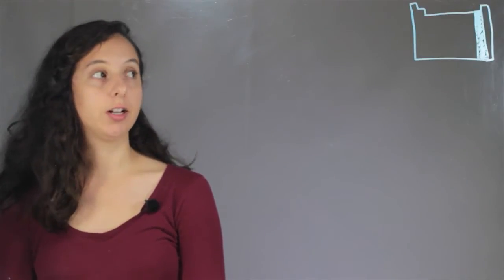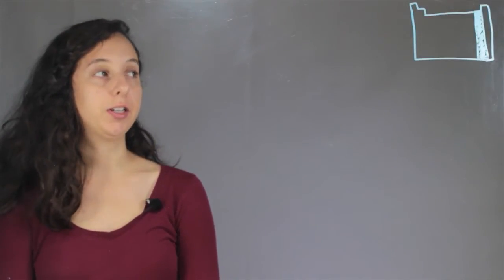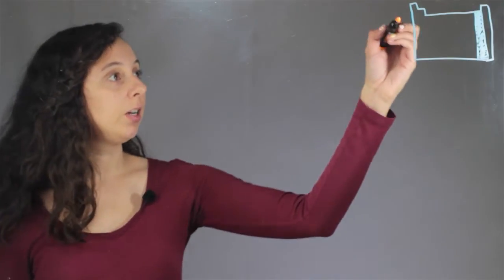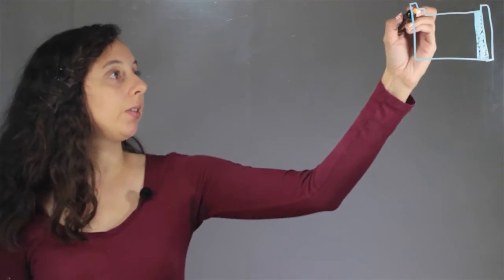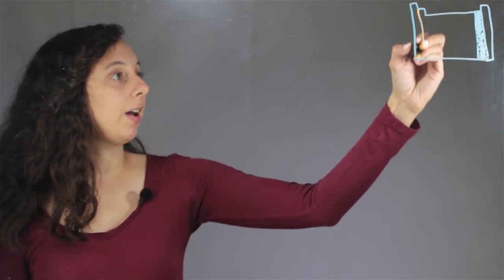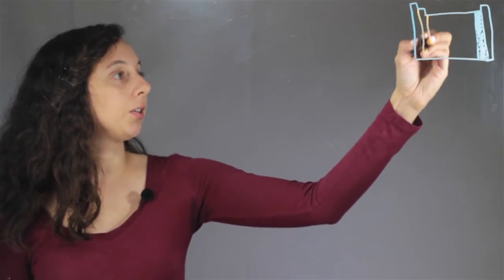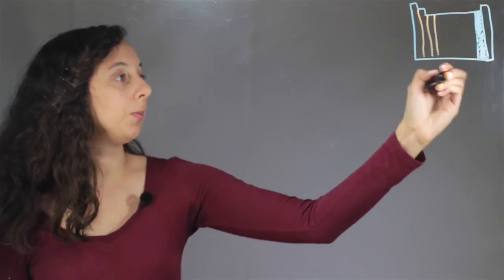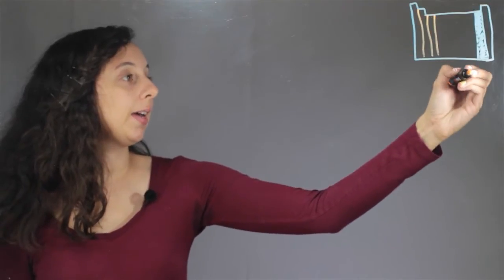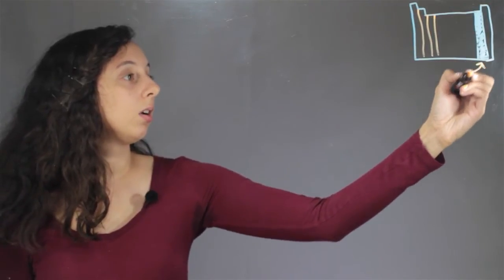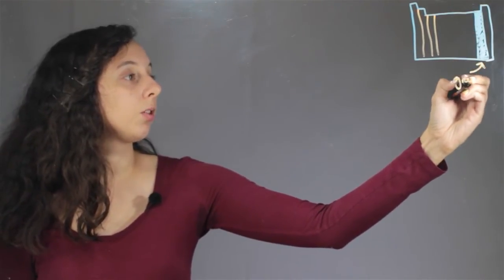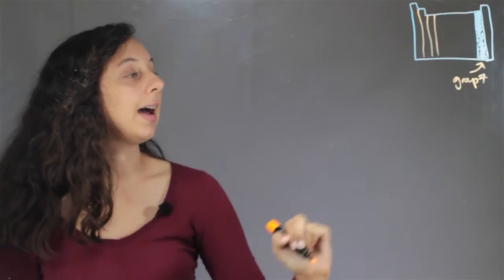If we look at our periodic table, you'll notice that it's divided into rows and columns. The columns are also named groups, and the halogens are in group 7, the one right before the end — the noble gases.